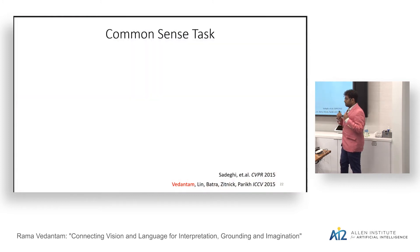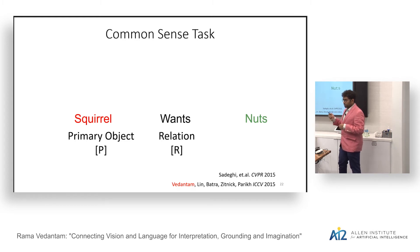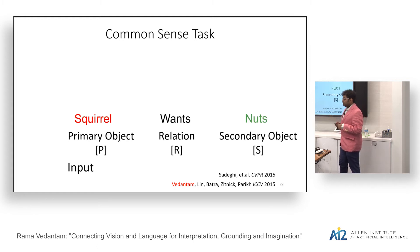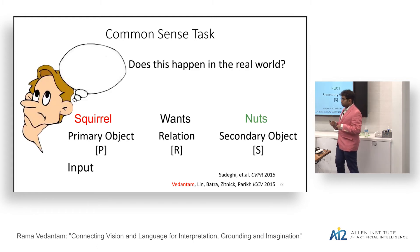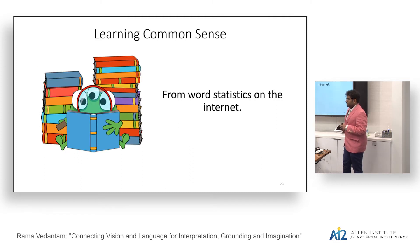We formalize this idea into a specific task: given an assertion like 'squirrel wants nuts' — where squirrel is the primary object, 'wants' is the relation, and nuts is the secondary object — our goal is to assess whether this happens in the real world. The output is a plausibility score. One baseline is to learn common sense from word statistics on the internet, but this has the issue that we normally only write about things interesting to talk about, and a lot of common sense knowledge is mundane.